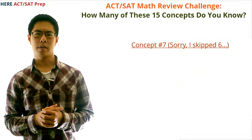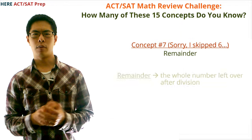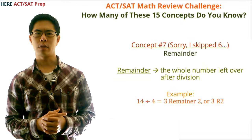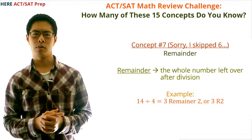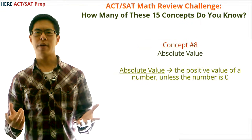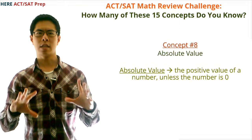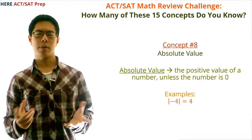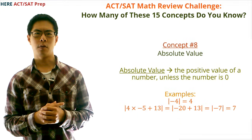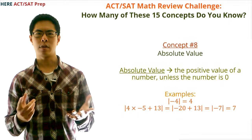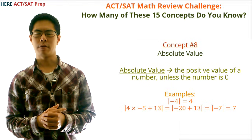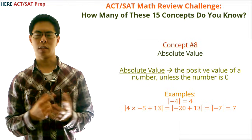Concept number seven: remainder. The remainder is the whole number left over after division. For example, 14 divided by 4 equals 3 with a remainder of 2. Concept number eight: absolute value. Absolute value is the positive value of a number unless the number is zero. For example, the absolute value of −4 is 4. And the absolute value of (4 × (−5) + 13) = |−20 + 13| = |−7| = 7.